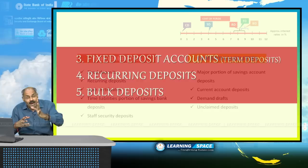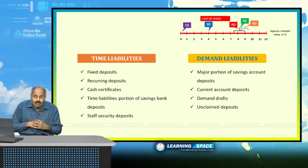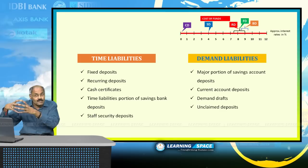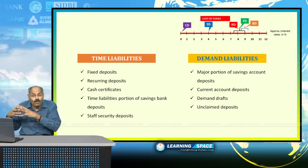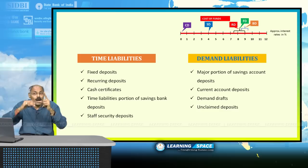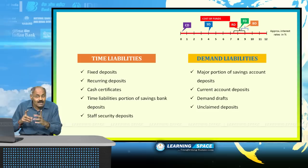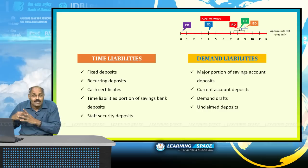Savings account and current account deposits are demand deposits or demand liabilities — you can deposit and withdraw at any time. But fixed deposits, recurring deposits, and bulk deposits are time deposits or time liabilities, because they are for a specified agreed period. If you want to withdraw money before the agreed period, you have to pay some penalty. Also, checkbook facility is not available for fixed deposit, recurring deposit, or bulk deposit accounts.